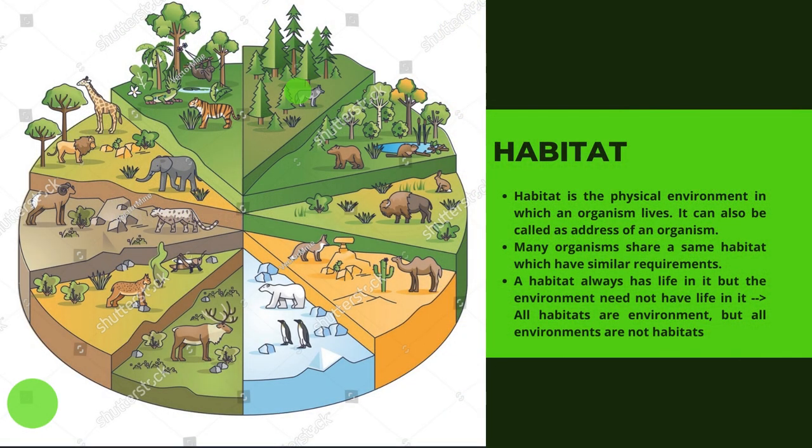What is a habitat? Habitat is the physical environment in which an organism lives. It can also be called the address of an organism. Many organisms share the same habitat, which have similar requirements. A habitat always has life in it, but the environment need not have life in it. All habitats are environment, but all environments are not habitats.